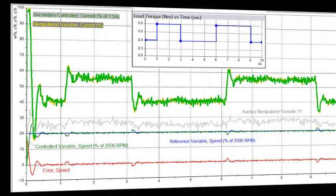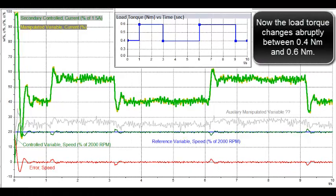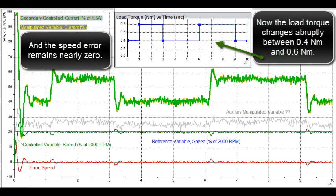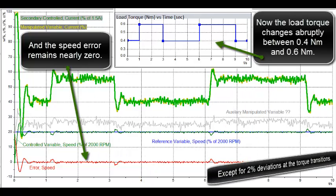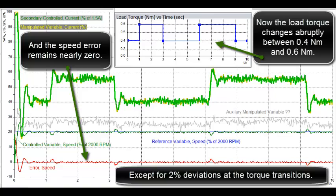Now the load torque changes abruptly between 0.4 Nm and 0.6 Nm, and the speed error remains nearly zero except for 2% deviations at the torque transitions.